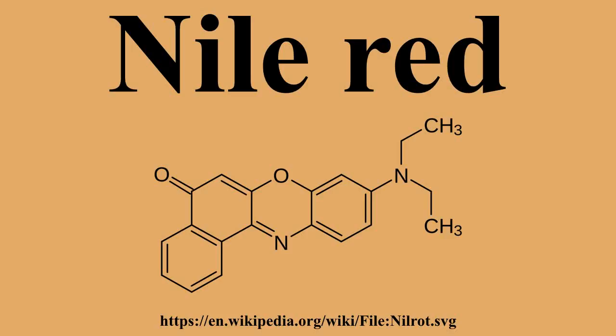Nile red is a lipophilic stain. It is produced by boiling a solution of nile blue with sulfuric acid, as can be seen from the structural formula. This process replaces an iminium group with a carbonyl group. Nile red stains intracellular lipid droplets yellow.